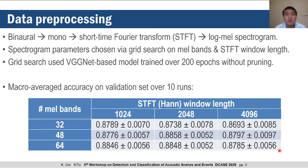The first step in generating predictions for our submission was to pre-process the data. We took the binaural tracks and converted them into mono tracks by taking the sample-wise mean across both channels, and then converted them into log-mel spectrograms by passing their short-time Fourier transforms (STFTs) through a mel filter bank. To choose the spectrogram parameters, we performed a grid search over the number of mel bands and the STFT window length, using a VGGNet-based model trained over 200 epochs without any pruning.